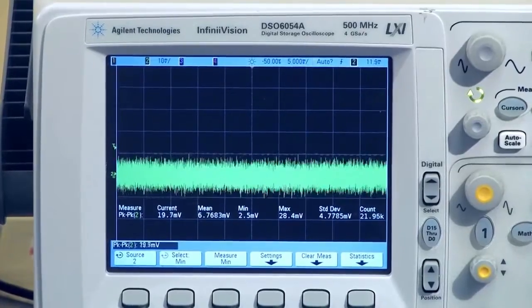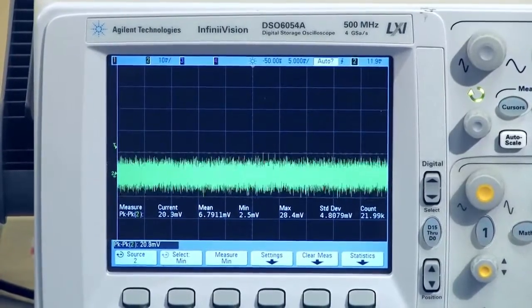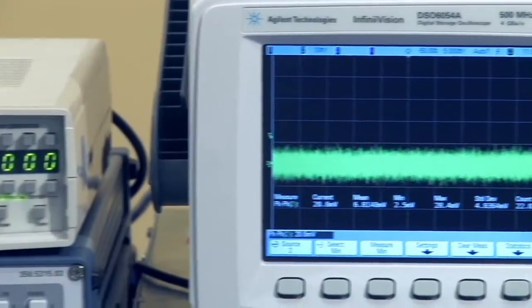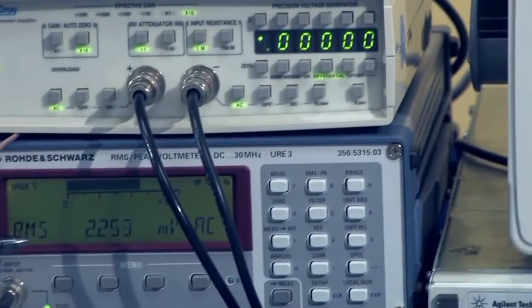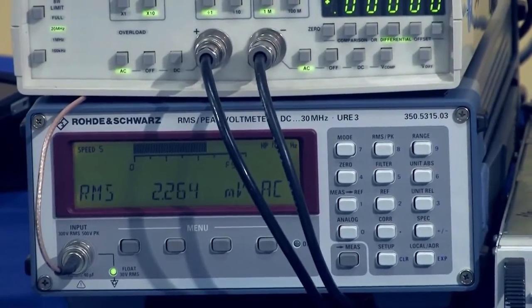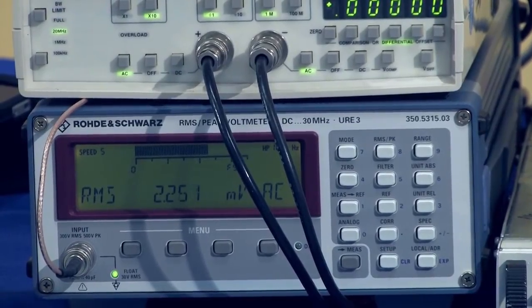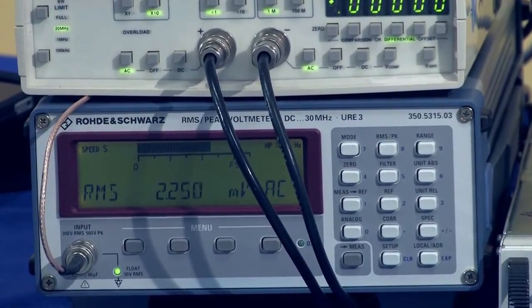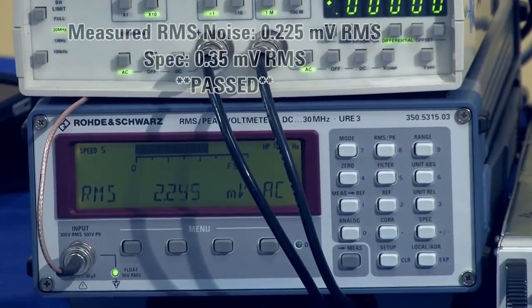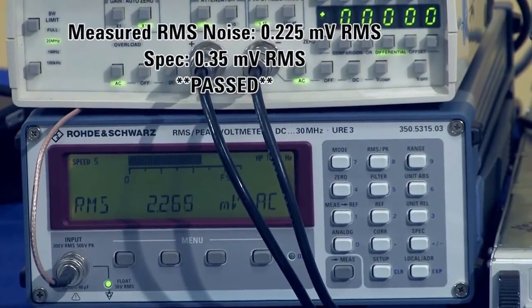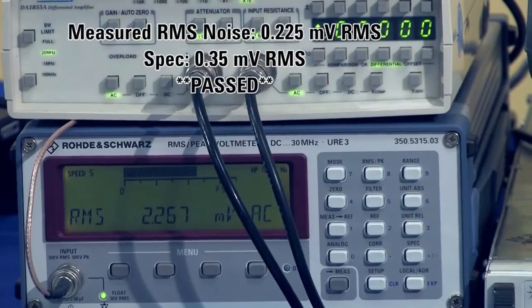The other instrument we need to look at is the RMS voltmeter. If you look at this right now, you can see that it's at 2.25 millivolts approximately. Again, it's also multiplied by 10, so it's measuring around 0.225 millivolts, which against the spec of 0.35 millivolts is within spec.